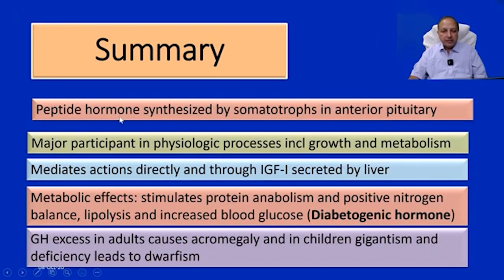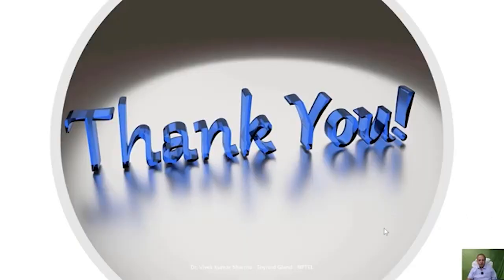To summarize: growth hormone is a peptide hormone synthesized by somatotropes in the anterior pituitary and is a major participant in physiological processes including growth and metabolism. It mediates actions directly and through IGF-1 secreted by the liver. Metabolically, it is anabolic on proteins (positive nitrogen balance), lipolytic (decreasing body fat), and diabetogenic (increasing blood glucose). Growth hormone excess in adults causes acromegaly and in children causes gigantism; deficiency leads to dwarfism.